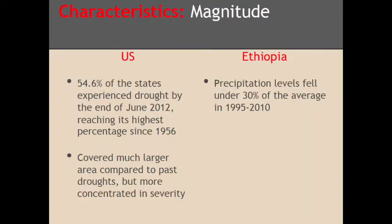The U.S. 2012 drought is the largest in over 50 years and makes one of the top ten largest droughts of the century, showing that although droughts in the U.S. do not occur as frequently as in eastern Africa, each occurrence causes severe consequences. In contrast, Ethiopian droughts are more frequent, but the magnitude of past droughts has a large range.